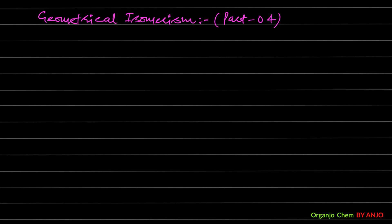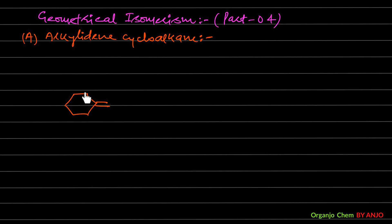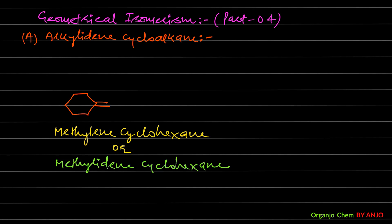In Part 3, we discussed the GI of cycloalkene. In today's video lecture, we will discuss two types of molecules. First, we will talk about alkylidenecycloalkane. The basic question is: what is alkylidenecycloalkane? Suppose we have a ring of any size — a six-membered ring — and when an exocyclic double bond is present, such molecules are called alkylidenecycloalkane. This molecule can also be called methylene cyclohexane. Today we will consider the geometrical isomerism of alkylidenecycloalkane.